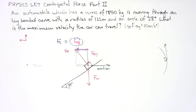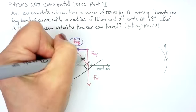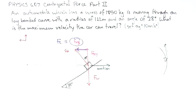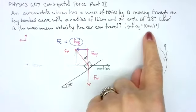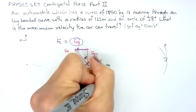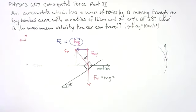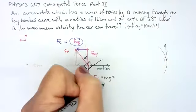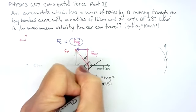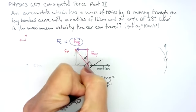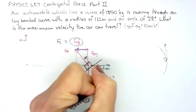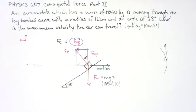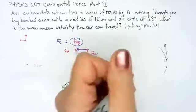All right, let's do some trig. So if I have an angle of 28 here, without going through the geometry of it, this angle is going to be 28. We rounded acceleration due to gravity up to 10. So my weight vector is going to be mass times gravity. My mass is 1850. So I'm going to have 1850 times 10. So this is going to be 18,500 newtons.